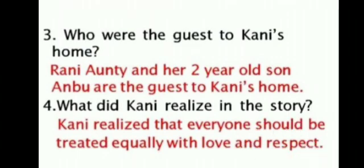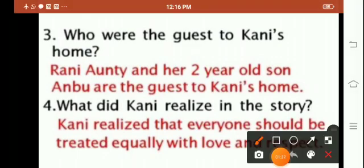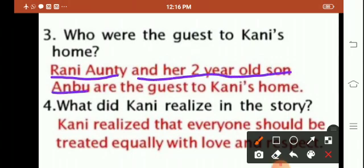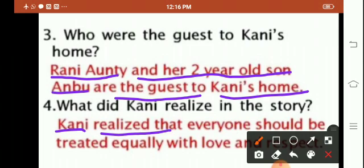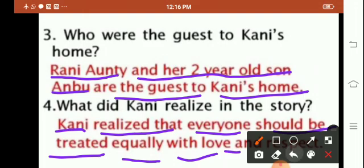3rd question: Who were the guests to Kani's home? Rani auntie and her 2 year old son Anbu are the guests to Kani's home. 4th question: What did Kani realize in the story? Kani realized that everyone should be treated equally with love and respect.